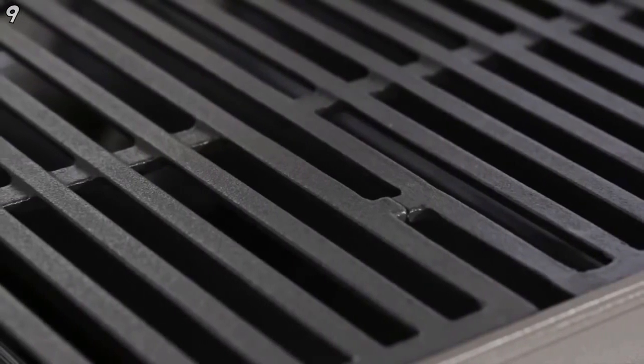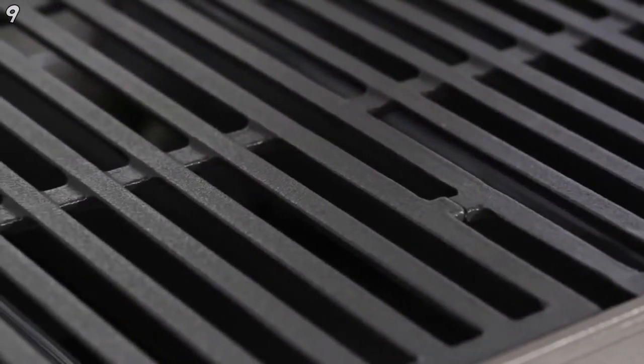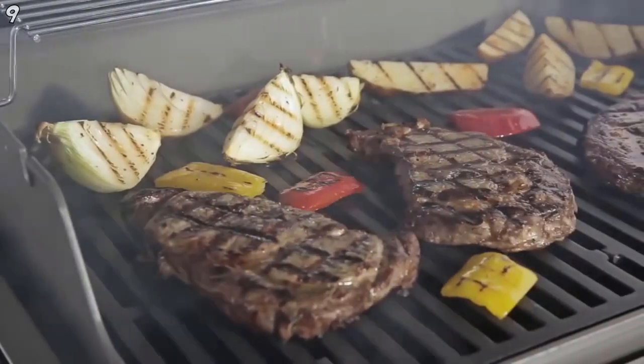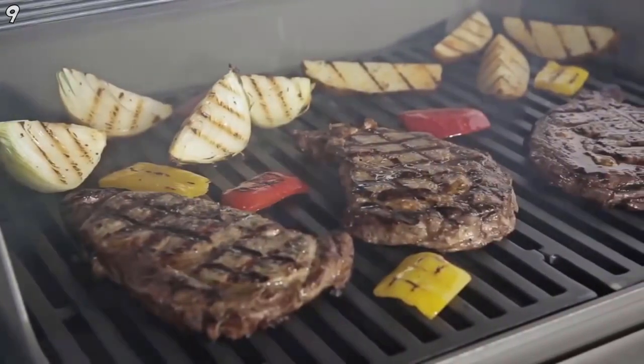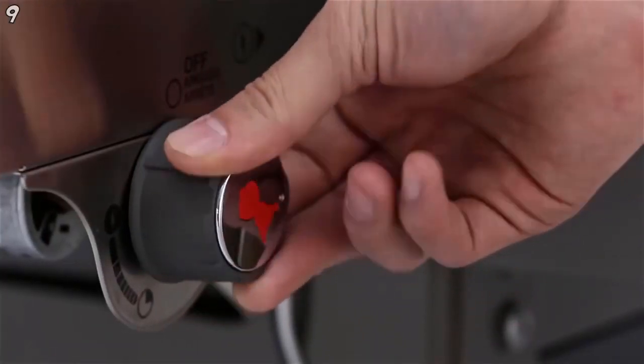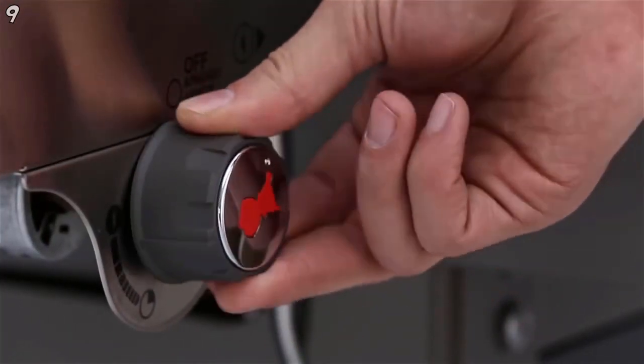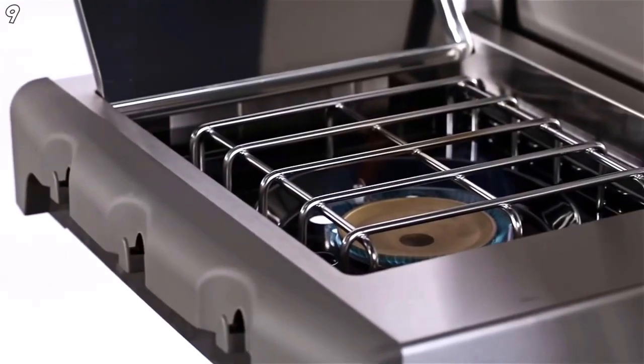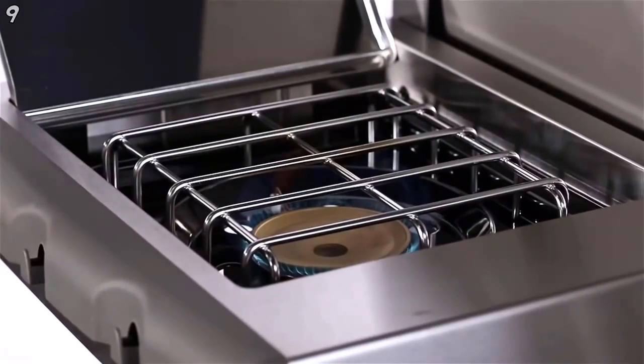Inside the Spirit Gas Grill, porcelain enameled cast iron cooking grates heat evenly and sear foods beautifully. The Spirit Gas Grill's sturdy 12,000 BTU per hour input side burner makes it a complete gas grill outdoor cooking station.